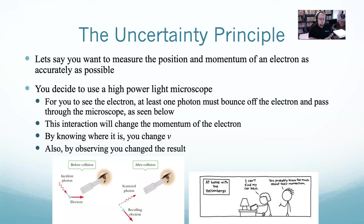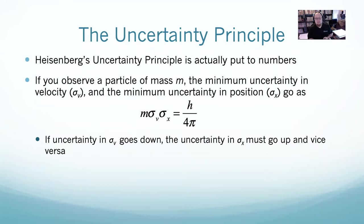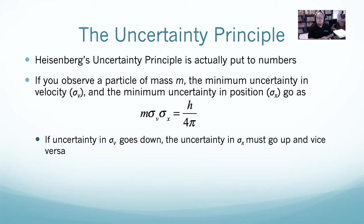So Heisenberg said: if you know the position of something, you cannot know its momentum, and if you know the momentum of something, you cannot know its position. He put it into math. The equation says: mass times the uncertainty in velocity times the uncertainty in position equals h over 4π. The less uncertainty you have in velocity, the more uncertainty you have in position, and vice versa. If you know where something is, you don't know where it's going. If you know where it's going, you don't know where it is.